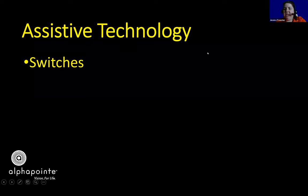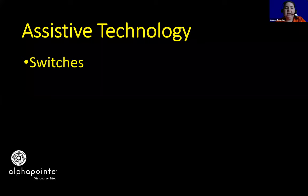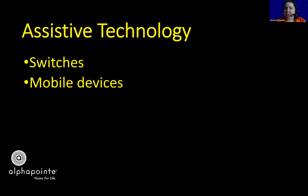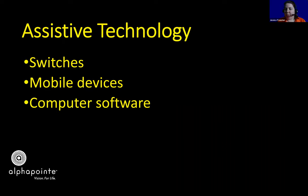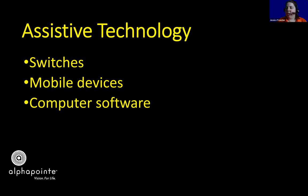Some examples of assistive technology: for students with multiple disabilities, a switch can turn on a toy to teach cause and effect. We won't focus heavily on switches today since we're concentrating on technology that is free or easy to obtain, and families of students with multiple disabilities likely already have them or would have difficulty getting them during the summer. There are also mobile devices — either dedicated devices like a handheld magnifier, or a tablet or cell phone with accessible apps. Computer software is probably the first thing people think of with assistive technology. And then there are low-tech devices that don't require plugging in but still fall under that umbrella.